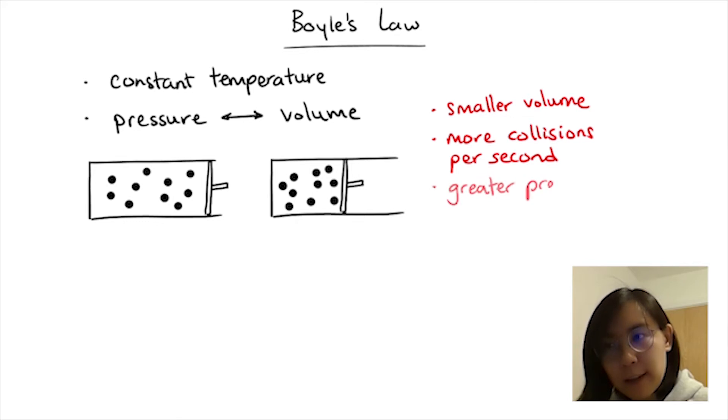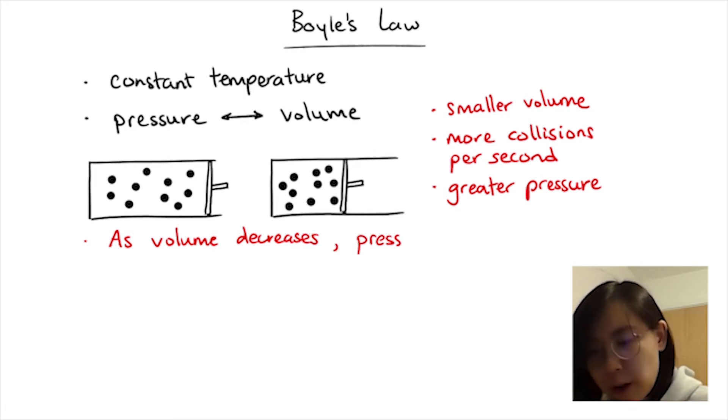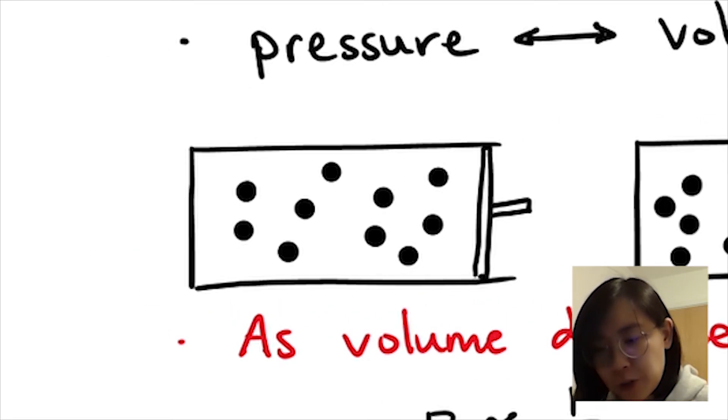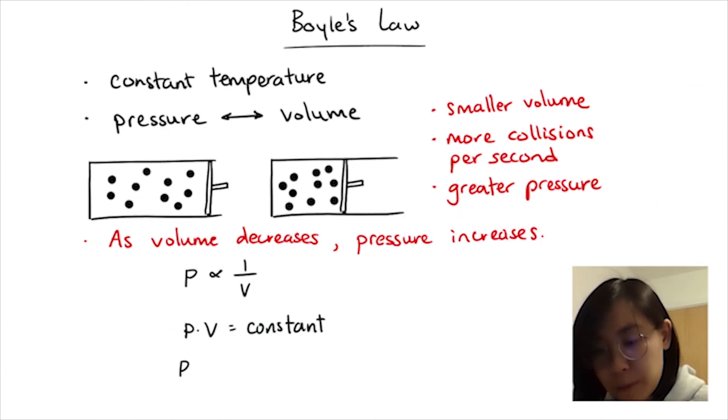So they now collectively exert more pressure. We can conclude from this that as volume decreases, pressure increases, making them inversely proportional. So P is proportional to 1 over V. If I bring V to the left-hand side, PV equals a constant. In other words, if I multiply the initial pressure and initial volume, that gives the same value as multiplying the final pressure and final volume. P1V1 equals P2V2.